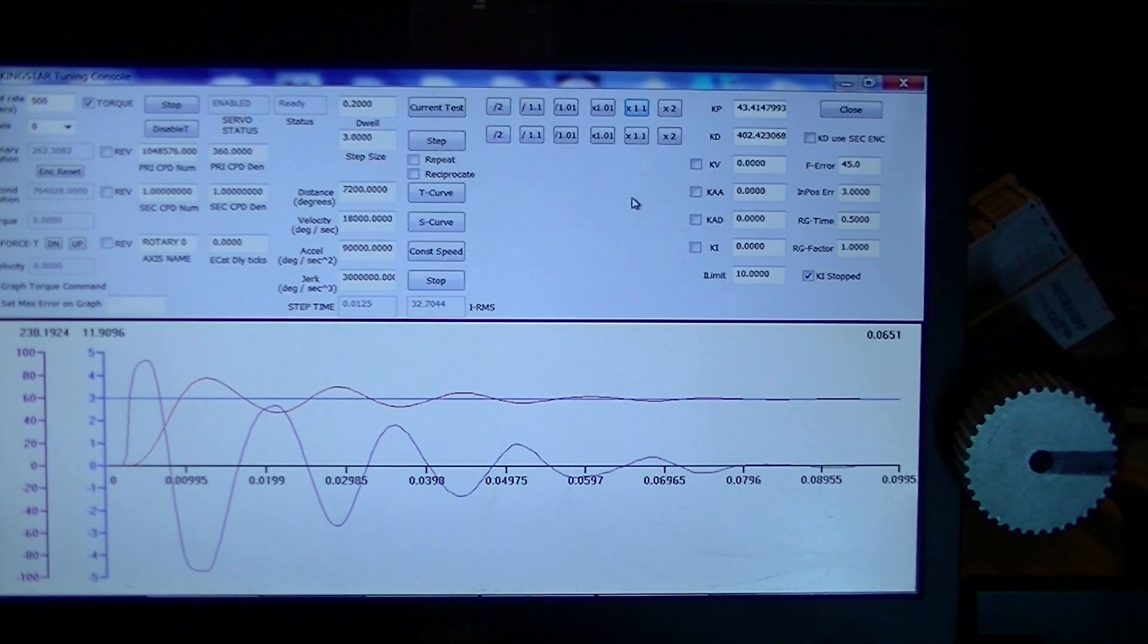At this point, I think it's safe to go out and run a traditional trapezoidal move. Here we have commands set up: 72 degrees, 7,200 degrees. That is 20 revolutions. 18,000 degrees per second, that's about 3,000 RPM. The acceleration is chosen to get up to speed in 200 milliseconds.